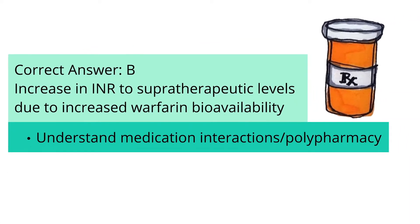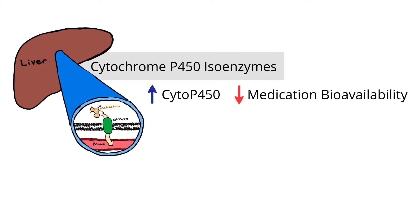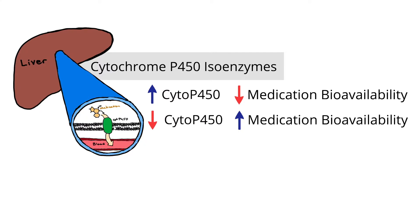The crux of this question is understanding how medications can affect one another. There are many mechanisms that can cause interactions between medications. However, the most well-known and commonly tested are those interactions that involve cytochrome P450 isoenzymes, also called CYP450 isoenzymes, which are responsible for metabolizing many medicines.